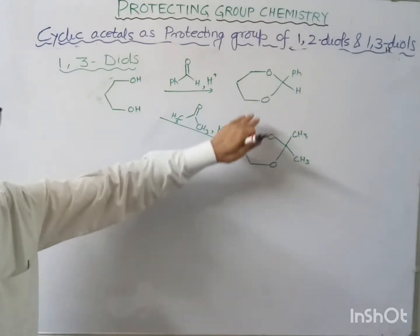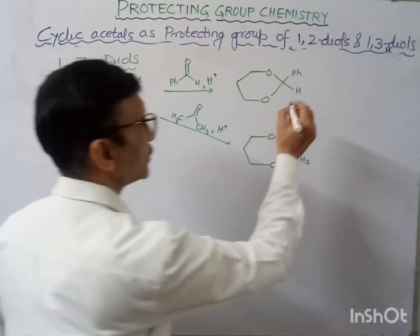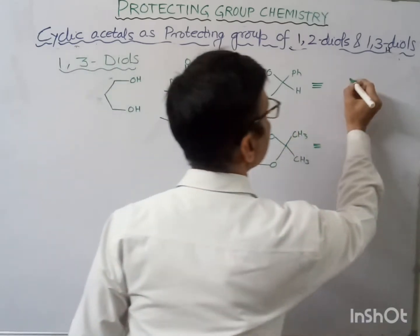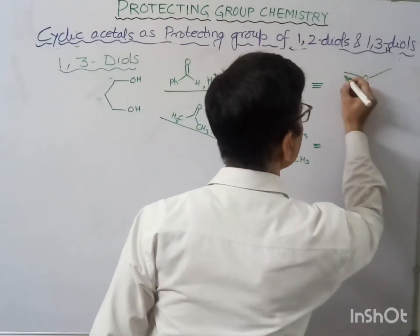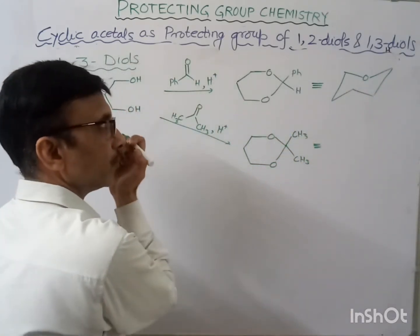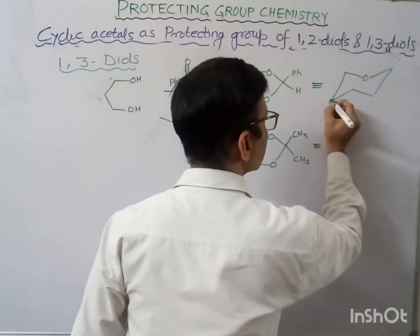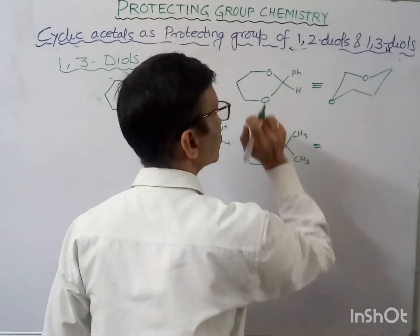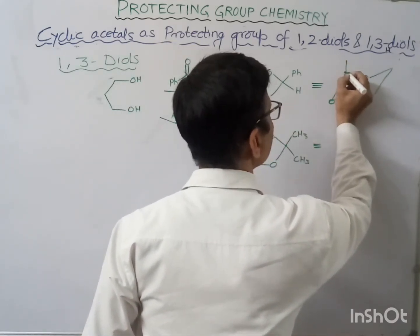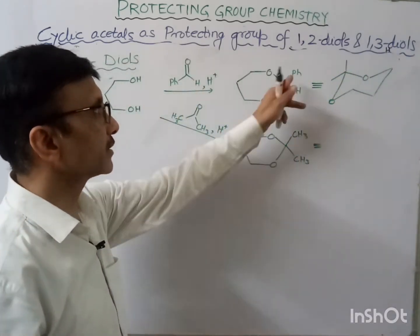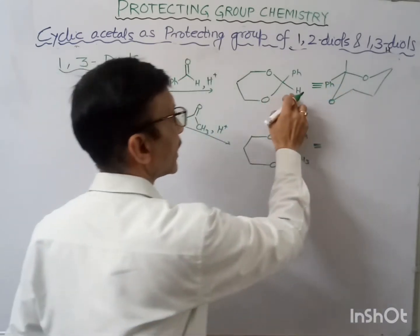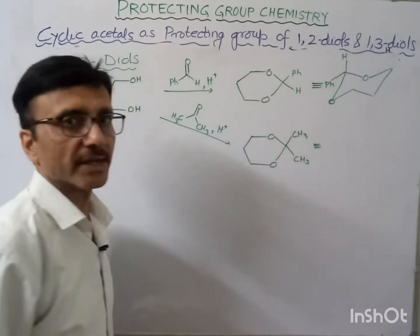This is a six-membered cyclic acetal. Now if we convert it into the chair form, one of the Ph groups — being the bulkier group — will come at the equatorial position and the hydrogen will come at the axial position.